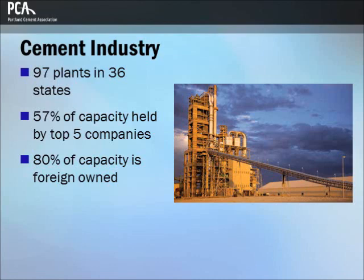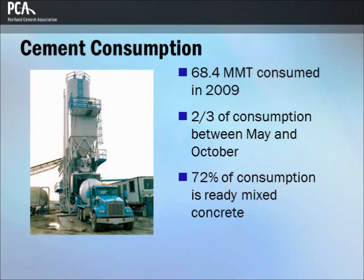Cement production is geographically dispersed, with 97 plants in 36 states. The top five companies operate 57% of the clinker capacity. Roughly 80% of the clinker capacity is owned by companies headquartered outside the United States. 68.4 million metric tons, or 75.2 million tons, of cement were consumed in the United States in 2009.